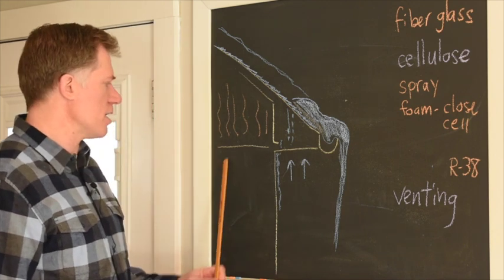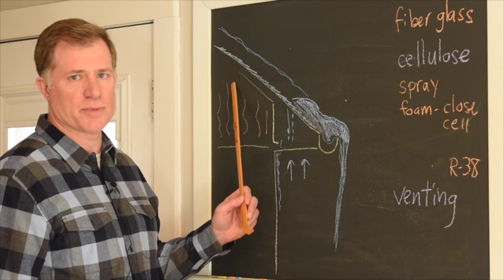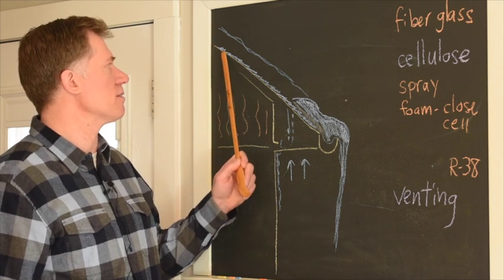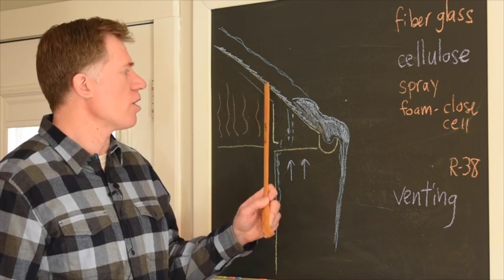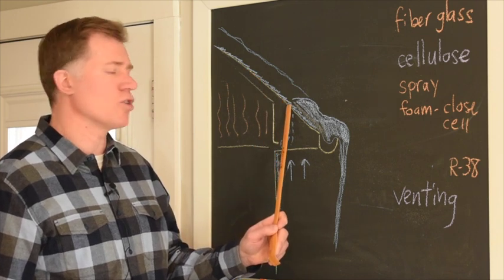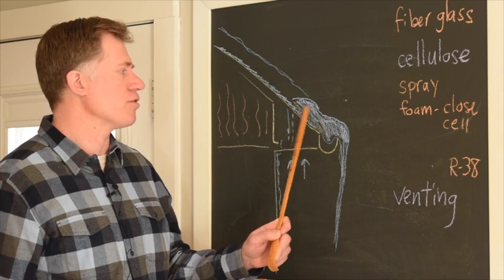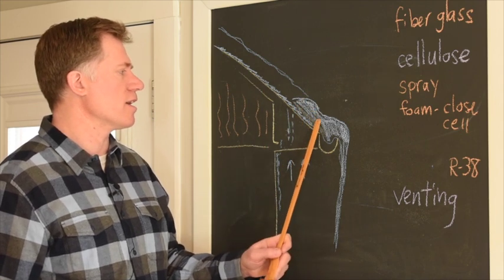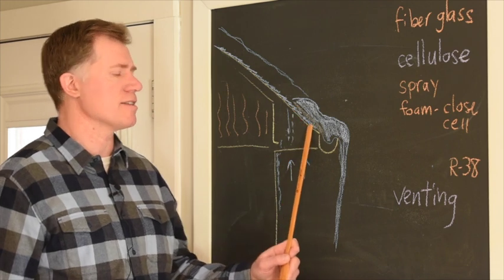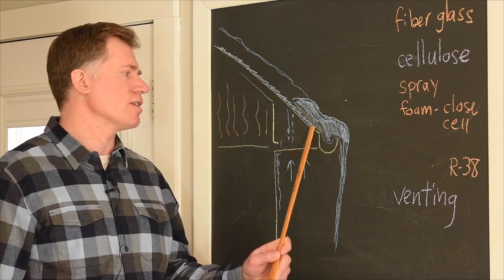What happens is the heat from inside the house goes up into your attic space, heats the roof, and melts that layer of snow right in contact with the roof. The water runs down until it gets to the cold section of the roof and freezes, and that just builds up over time and creates a situation where you have water sitting underneath this ice.